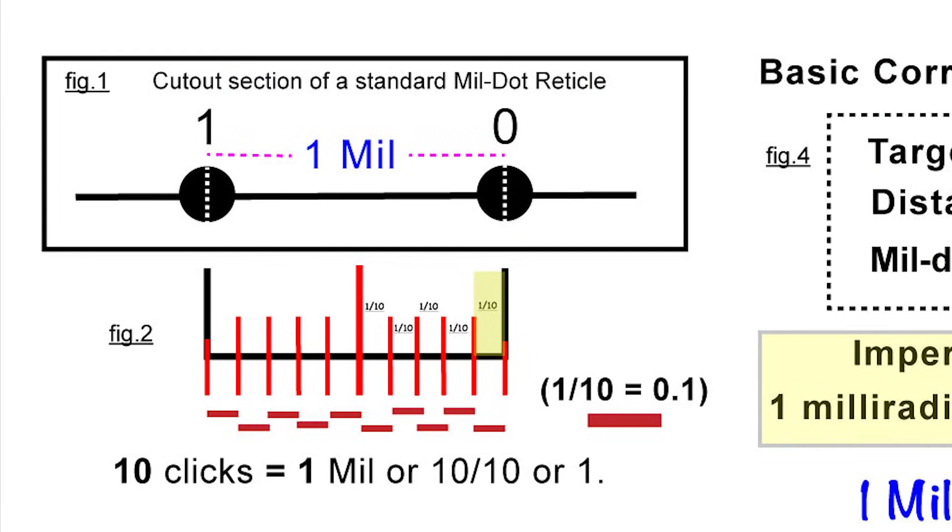In figure one, this is a cutout section of a standard mil dot reticle. So what you're looking at is two of the mil dots on a mil-rad system. And dot zero and dot one both have little white lines, vertical white lines.